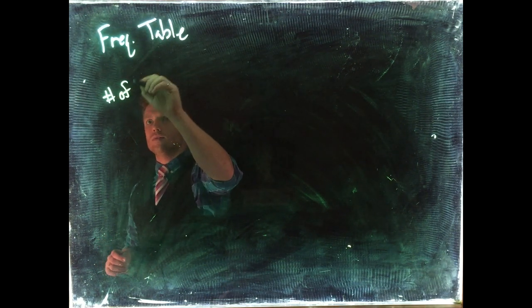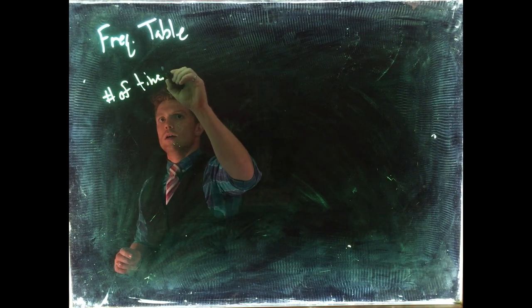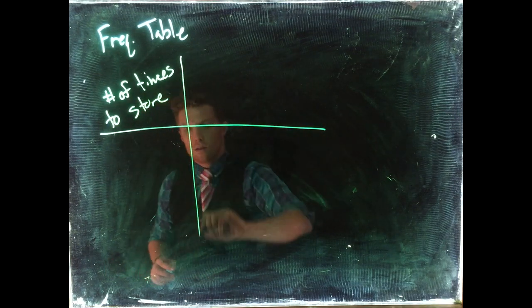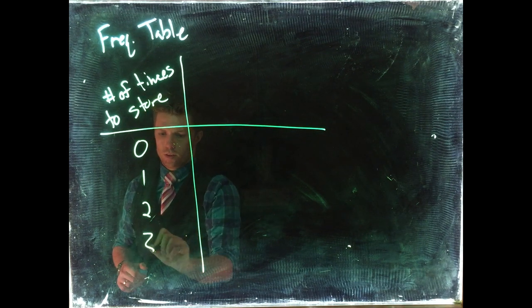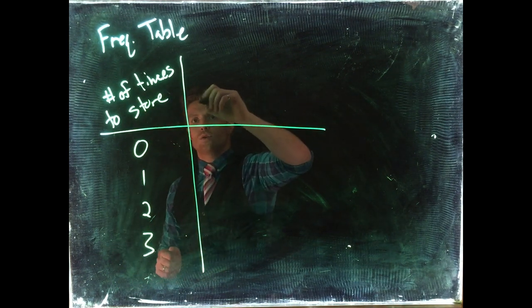Okay, let's finish up our frequency table example. We were working on the number of times to the store, and we started off with zero times per week, one, two, and three, and then we had the count or the frequency of those events from our sample.